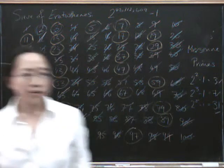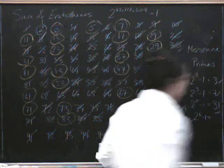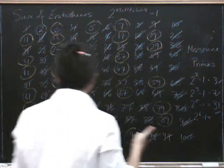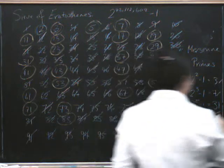What about 2 to the power of 6 take away 1? 2 to the power of 6 take away 1 is 2, 4, 8, 16, 32, 64. If we take away 1 from 64 we'll get 63. Ah, that's not prime.